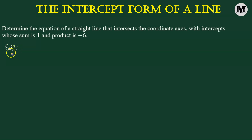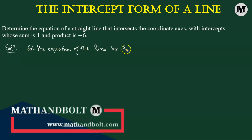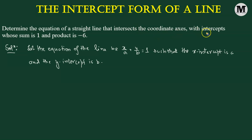We're going to first consider the equation of a straight line given in the intercept form, such that the x-intercept is given by A and the y-intercept is given by B. It's given in the problem that the sum of the intercepts equals one and the product is negative six, so A plus B equals one.